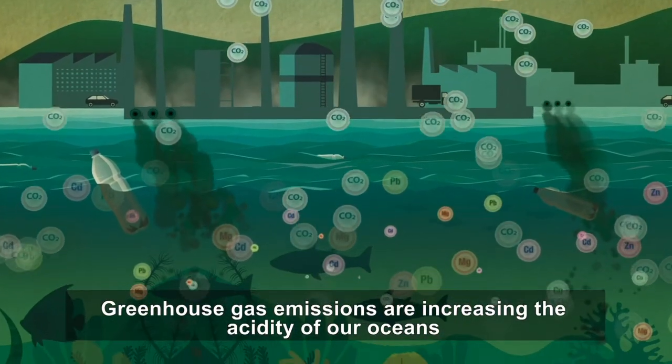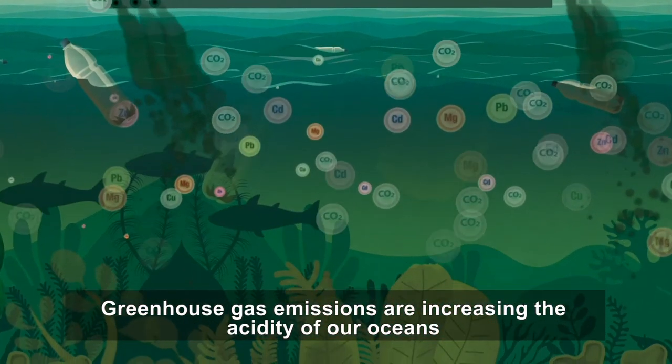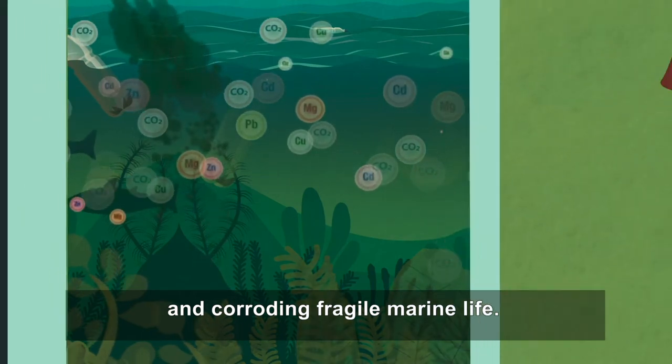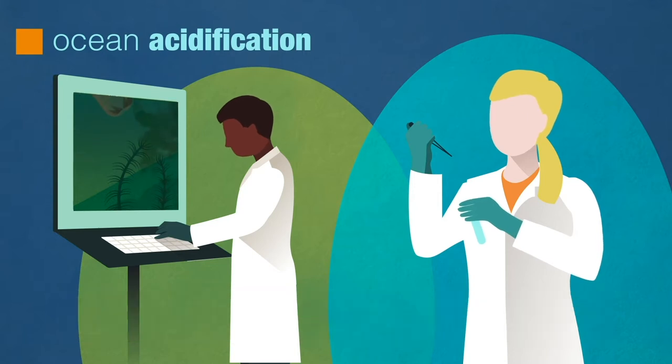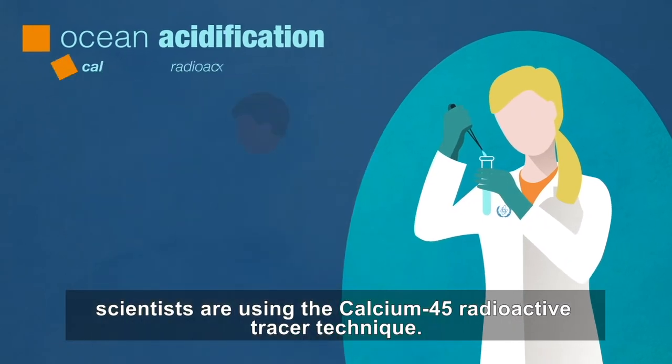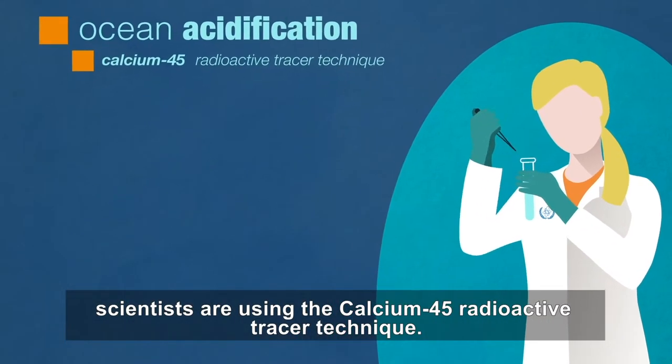Greenhouse gas emissions are increasing the acidity of our oceans and corroding fragile marine life. To better understand and measure these impacts, scientists are using the calcium 45 radioactive tracer technique.